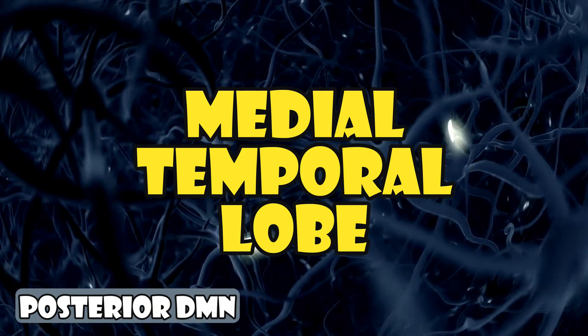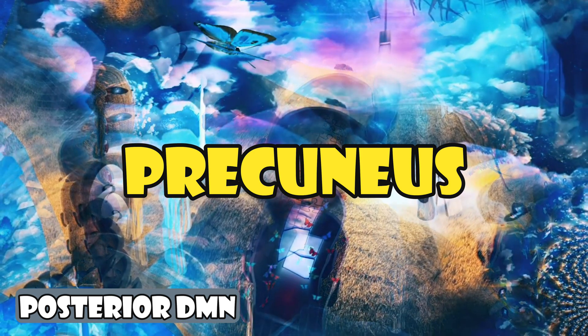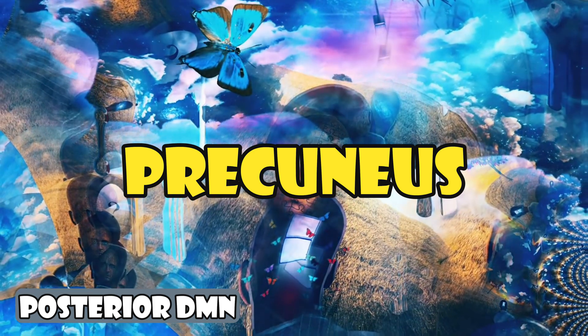Firstly, the medial temporal lobe, which stores your memories, and the precuneus, which generates imagined visual imagery.